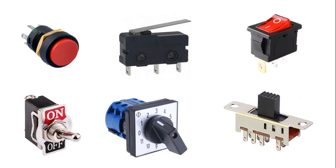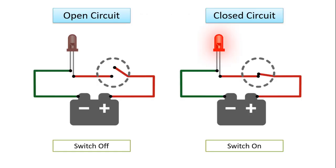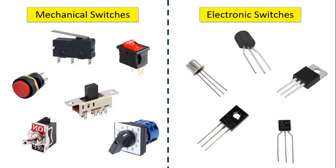Hi guys. In this lesson I will explain the types and working principles of mechanical switches used in electrical and electronic circuits. A switch is a simple device that is used to break a circuit and disturb the flow of electrons. A switch can be either closed or open. A closed switch is on and will activate the circuit, whereas an open switch is off and will interrupt or break the circuit. Switches can be either mechanical or electronic.